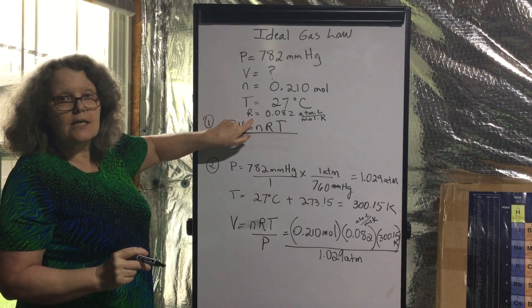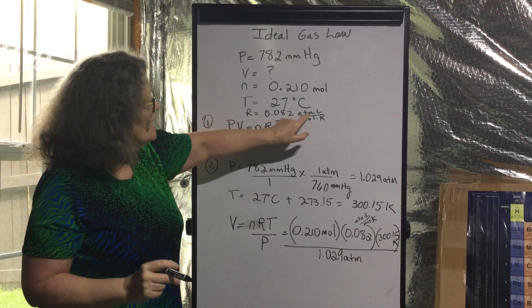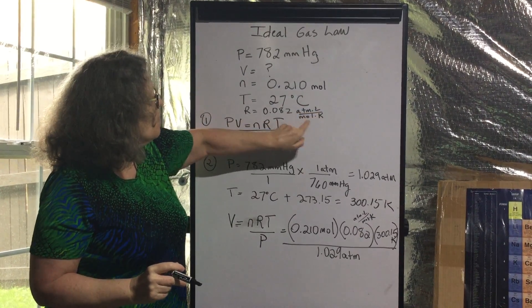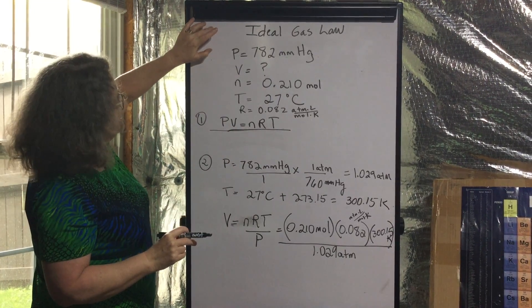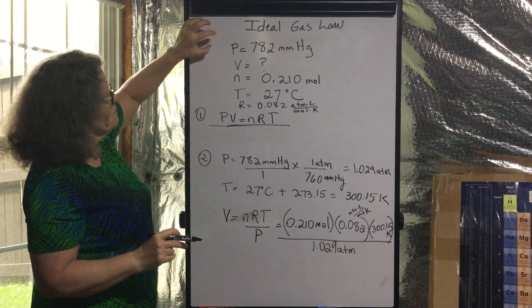The R gas constant is why we need our units in atmospheres, liters, moles, Kelvin. So ideal gas law, first thing I have to do is which equation?